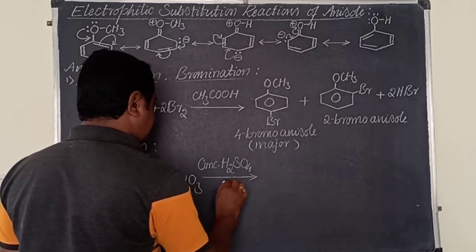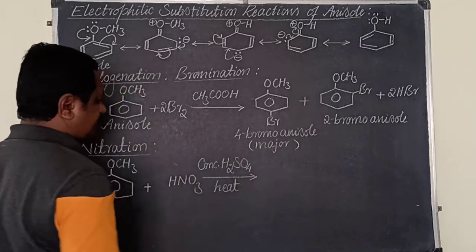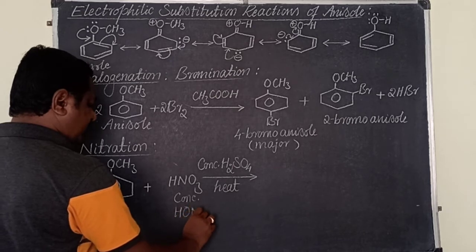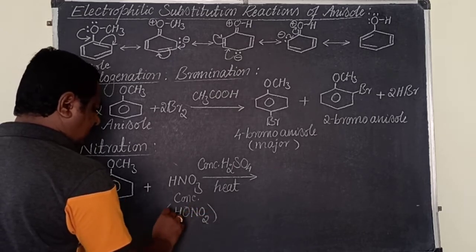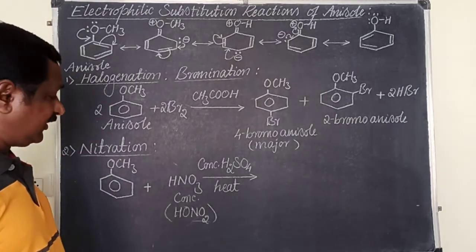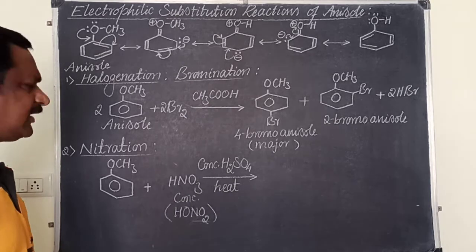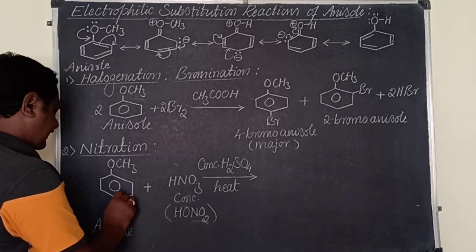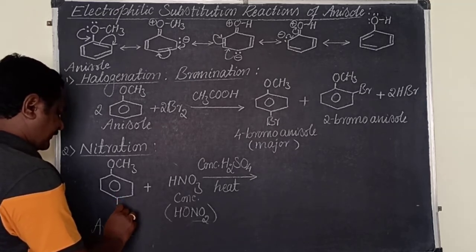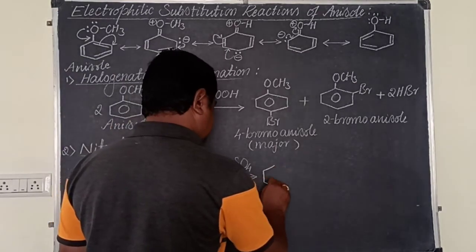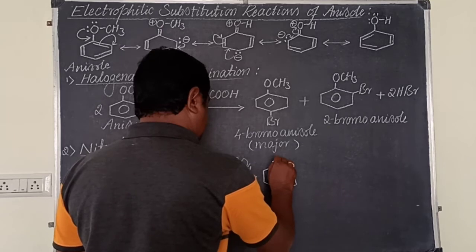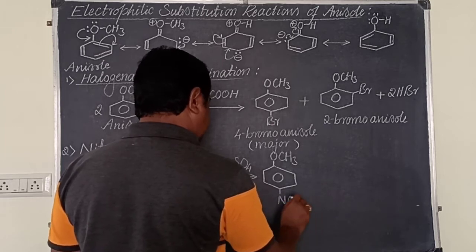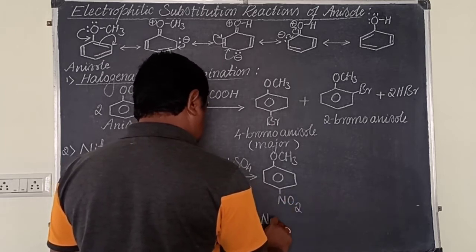Nitration is when an organic compound or aromatic hydrocarbon is heated with a nitrating mixture — a mixture of concentrated nitric acid and concentrated sulfuric acid. When anisole is heated with concentrated nitric acid in the presence of concentrated sulfuric acid, the electrophile NO2+ is generated. At the para position, hydrogen is replaced by the nitro group, giving 4-nitroanisole.